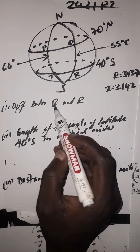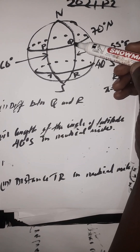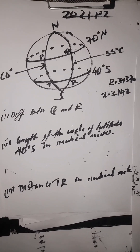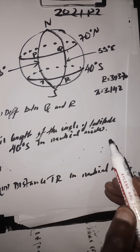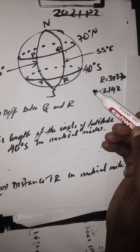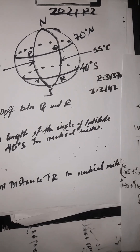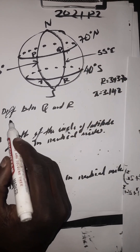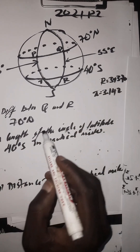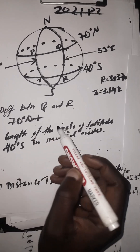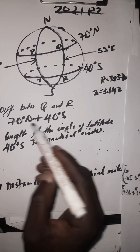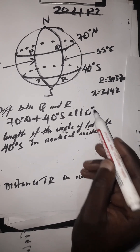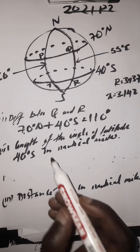The first question is to determine the difference in longitude between point Q and R. Q is here and R is here. Q is on 70 degrees north and R is on 40 degrees south — different hemisphere sides, so we add them. 70 plus 40 is 110 degrees. That's the answer.